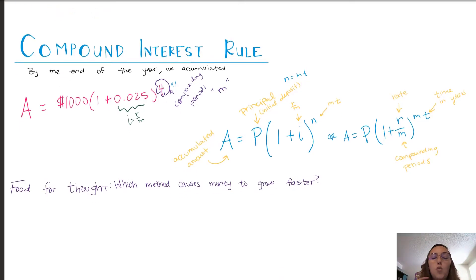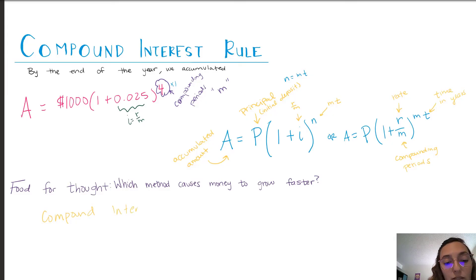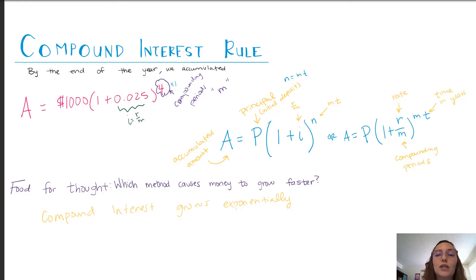Now, some food for thought: which method causes money to grow faster — simple interest or compound interest? There's a term people use in statistics and in commercials: exponentially. Exponentially means exponent. Compound interest grows exponentially, whereas simple interest has no exponents — its power is one, so it grows linearly. Compound interest makes money grow a lot faster, which is why when you have a credit card, that is how the bank makes money off of you — the money grows exponentially. Let's go make good decisions out there.